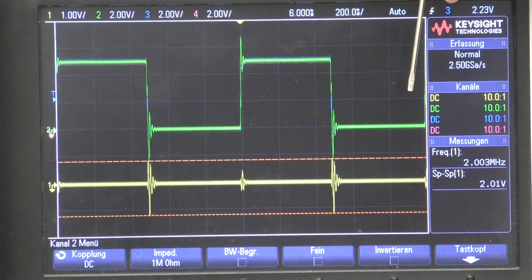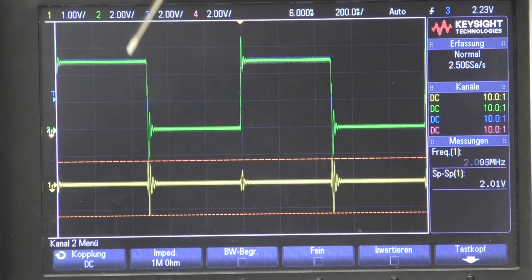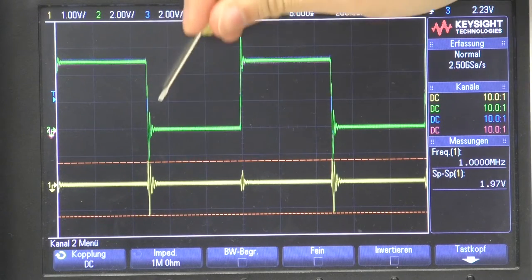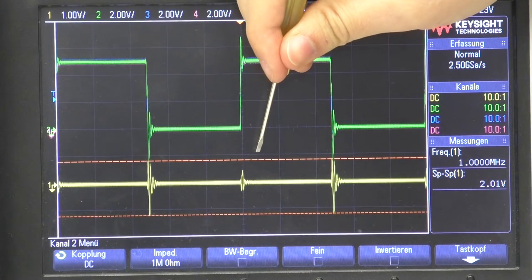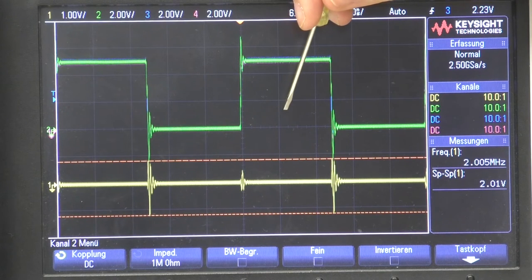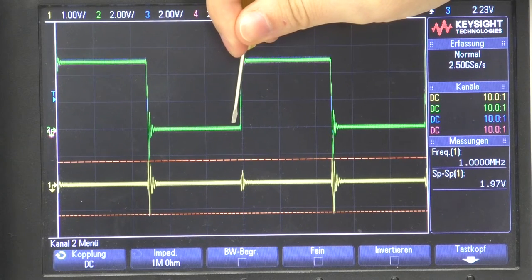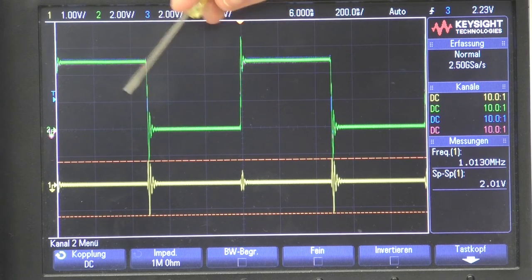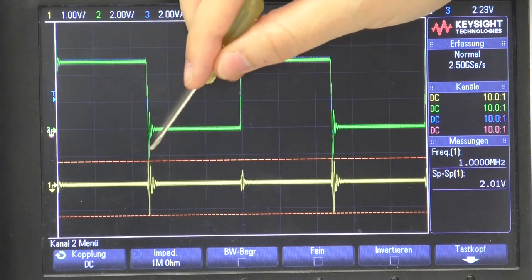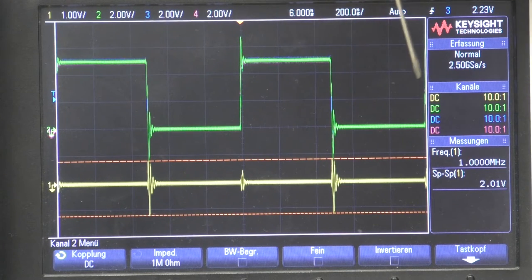In addition we can observe that the ground bounce voltage is higher here when switching from 1 to 0 than when switching from 0 to 1. So why is that? The reason for that is when we are switching from high to low, both crowbar current and dynamic switching current sum up as both are flowing into ground. When switching from low to high however, the ground bounce voltage only consists of the crowbar current.